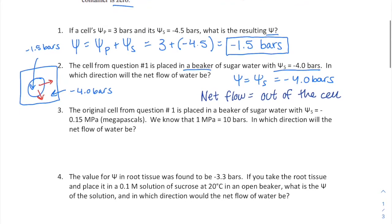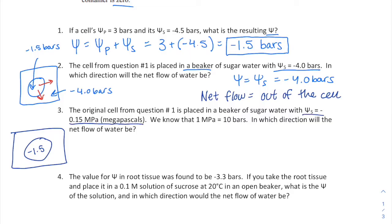Question three is very similar to question two — the same cell is placed into a beaker, but this time the solute potential is given in megapascals. They tell us the unit conversion: I need to convert negative 0.15 megapascals into bars to make a comparison.